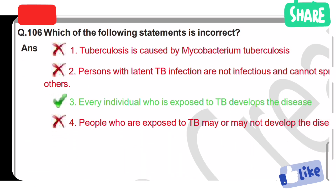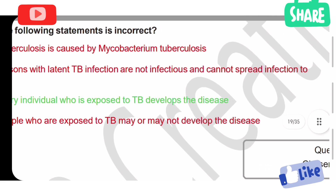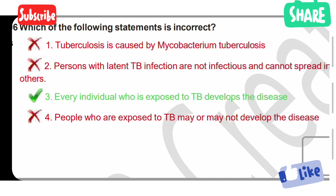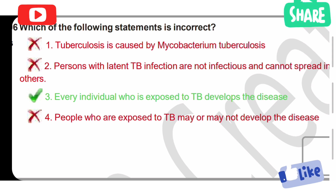Which of the following statements is incorrect? Option 1: Tuberculosis is caused by Mycobacterium tuberculosis — this is correct. Option 2: Persons with latent TB infections are not infectious and cannot spread infection to others — this is also correct. Option 3: Every individual who is exposed to TB develops the disease — this is the wrong concept. Option 4: People who are exposed to TB may or may not develop the disease — this is correct. So Option 3 is the correct answer, as it is the incorrect statement.